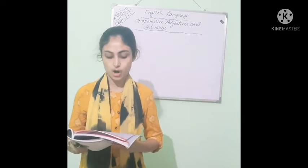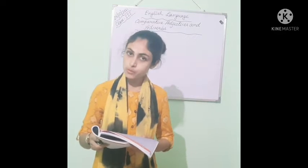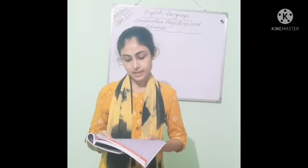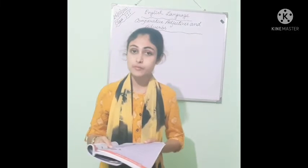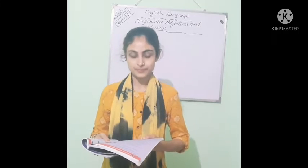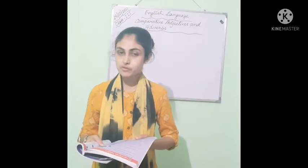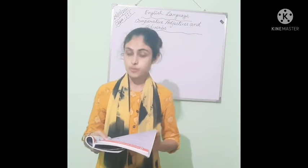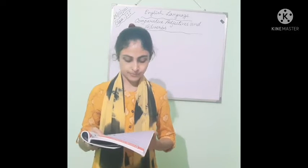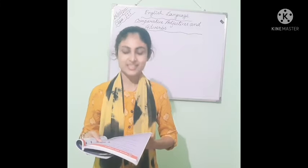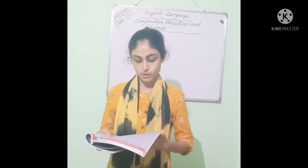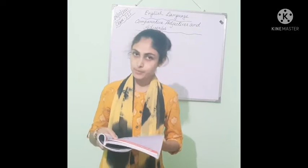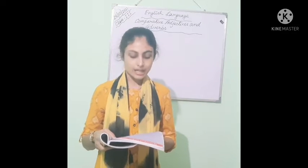For long words, add 'more' or 'less' before the word, and 'than' after. For example: being happy is more important than having money. 'Important' is a long word. 'Beautiful' is also a long word. So we use 'more beautiful' and 'more important'. Also: having money is less important than being happy. So we use more or less before any long word.